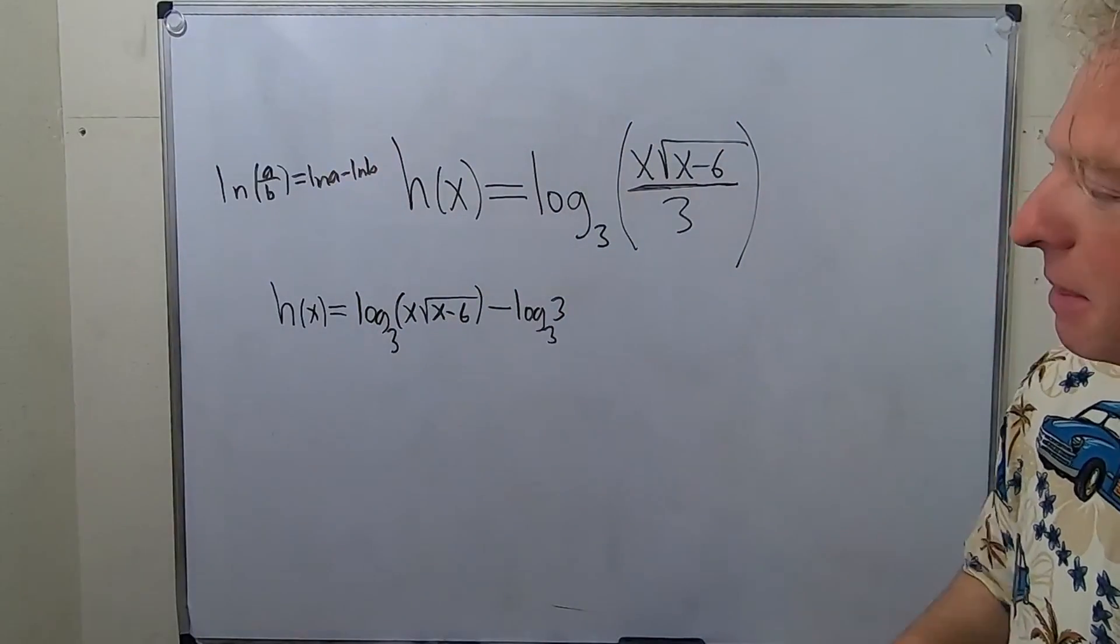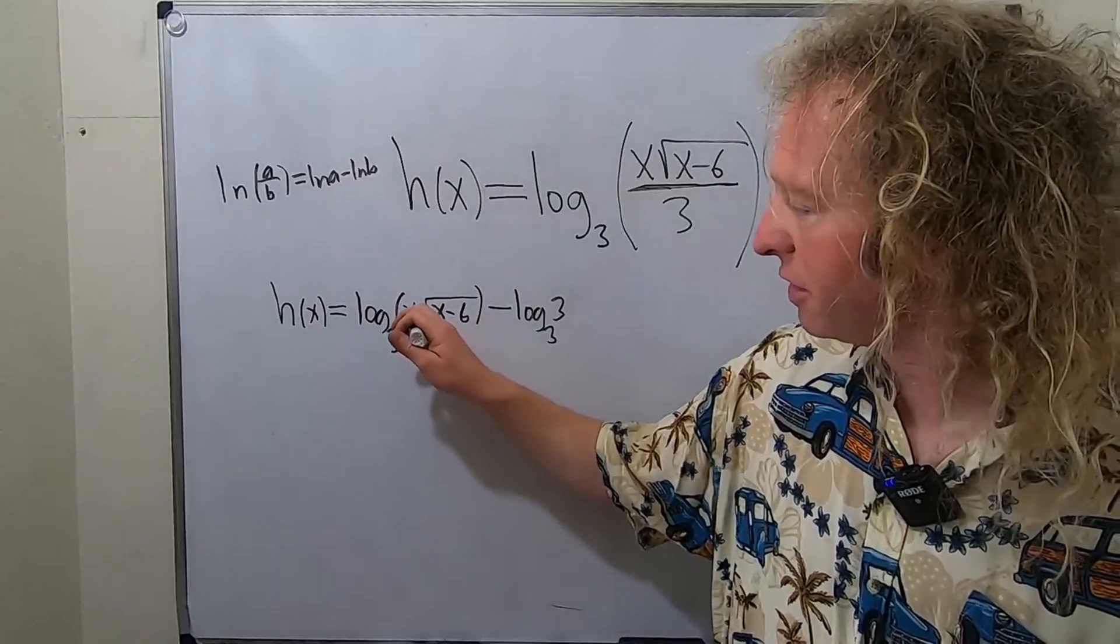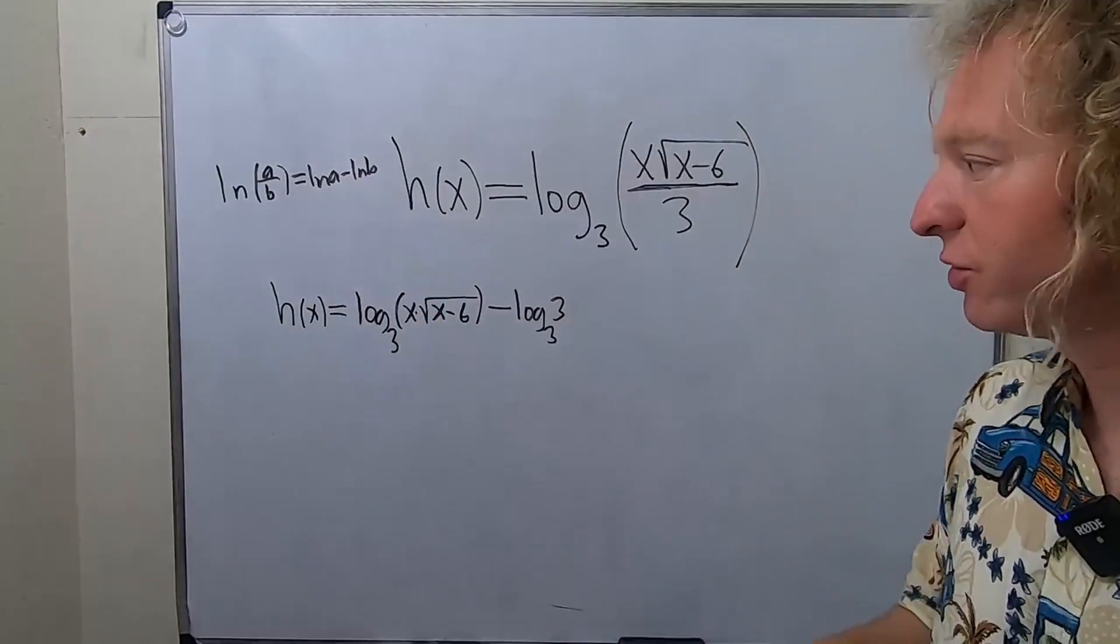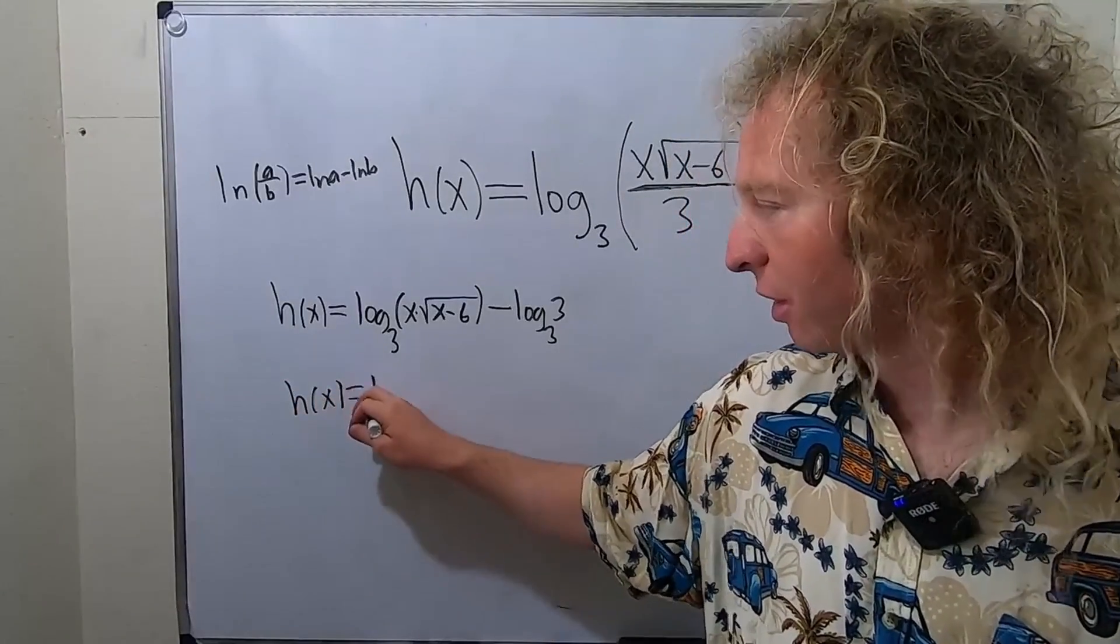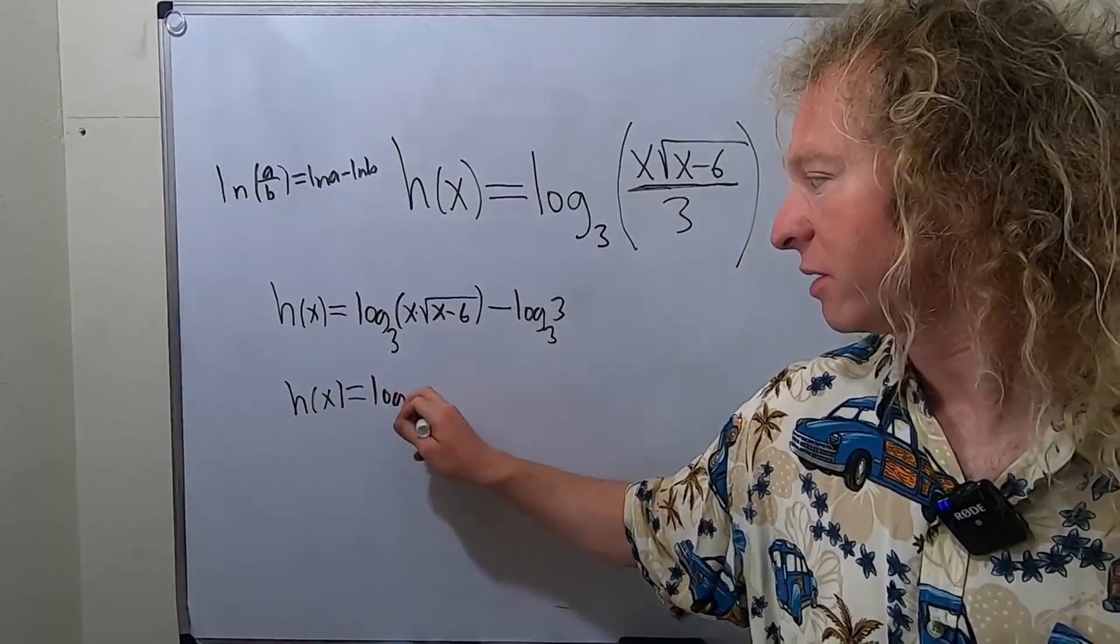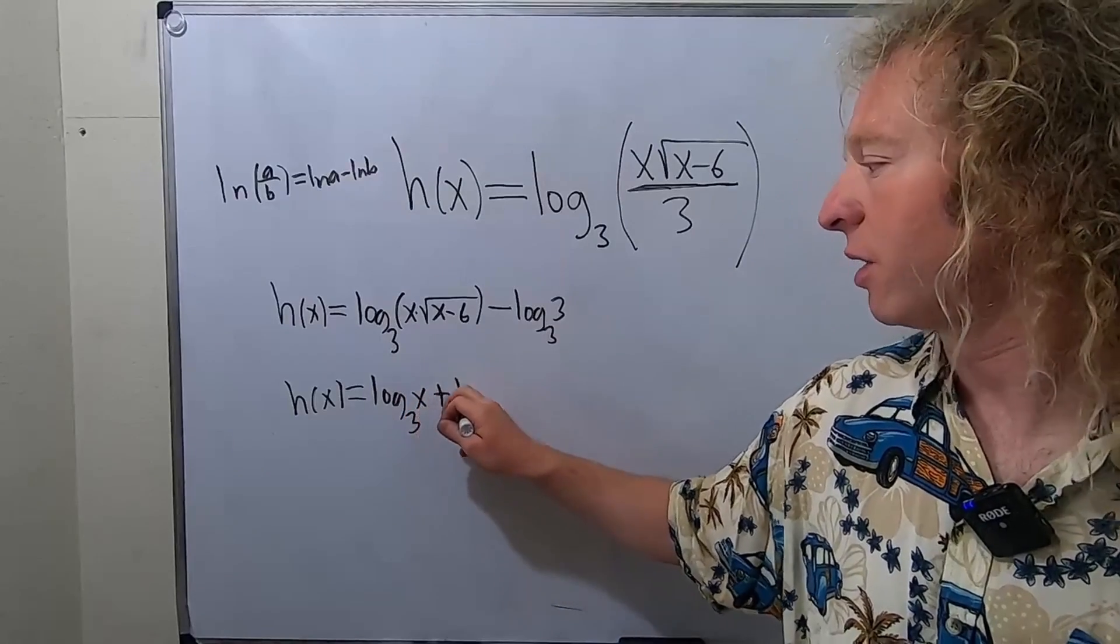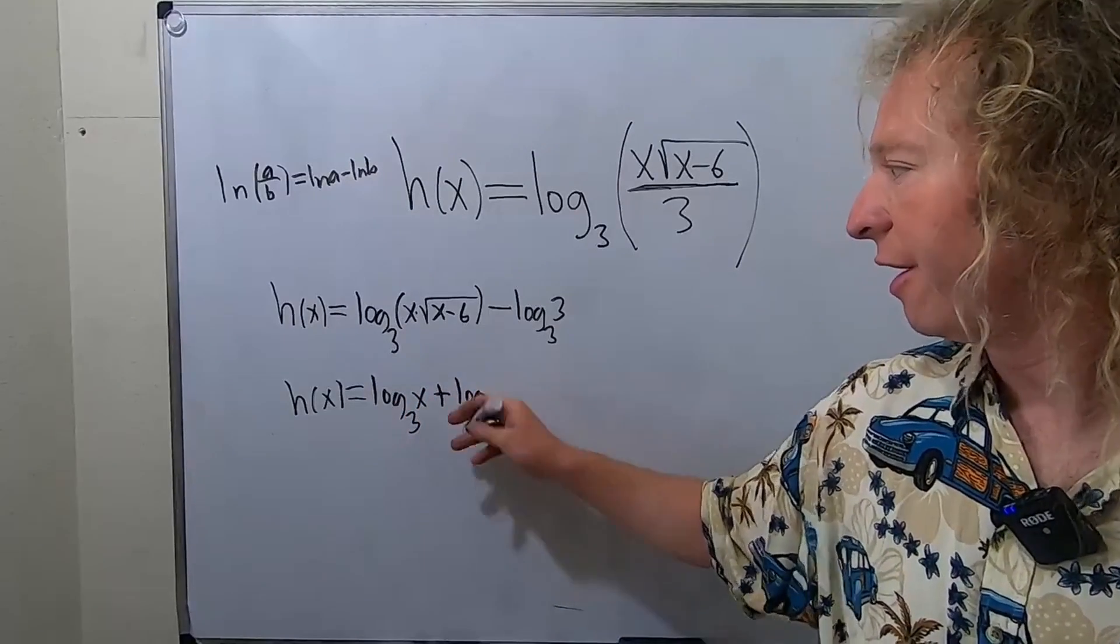And we can expand this even more. This right here is multiplication, so multiplication turns into addition. So h of x is equal to log base 3 of x plus log base 3 of this piece here.